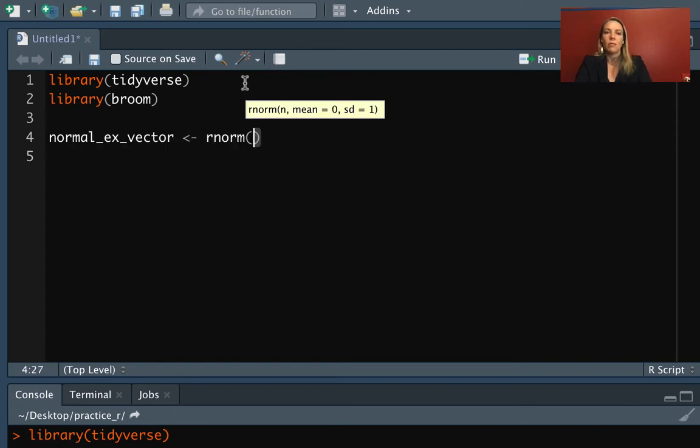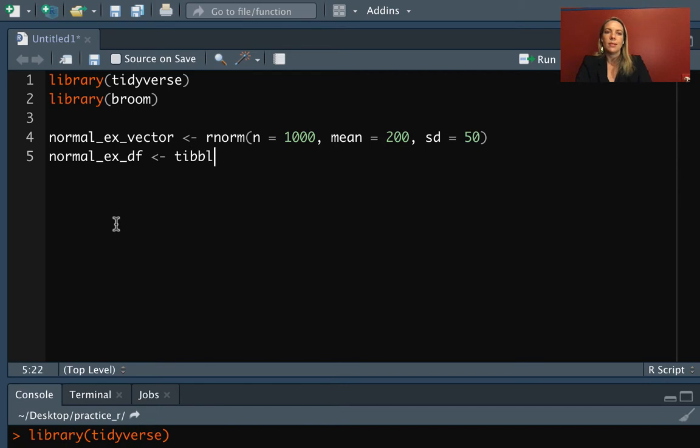We're using the rnorm function, which allows us to draw a random sample from a normal distribution. We first say how long we want that to be, how many numbers to draw, and then the mean value is 200 and a standard deviation of 50. Then we can put that inside a data frame using tibble.